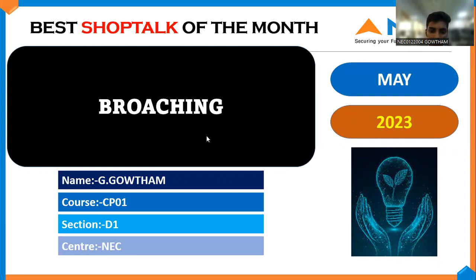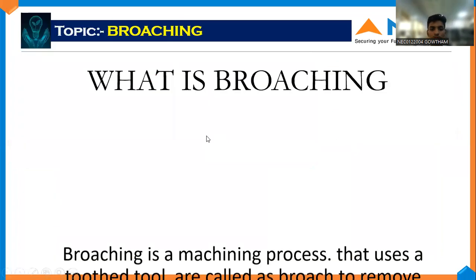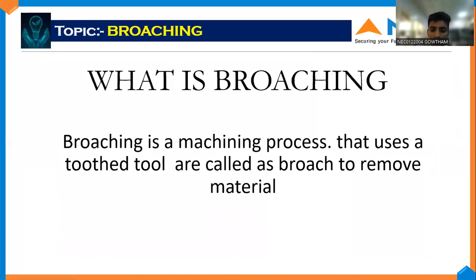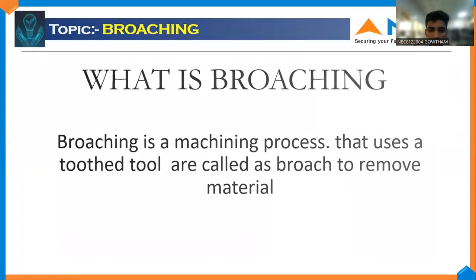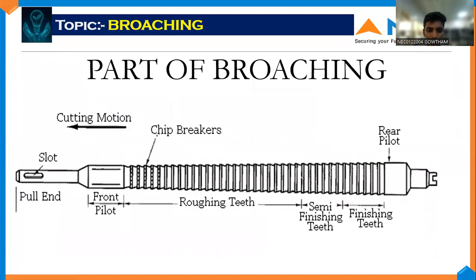What is a broaching tool? Broaching is a machining process that uses a tool, called a broach, to remove material. Main parts of the broaching tool: front pilot, rough teeth, semi-finishing teeth, finishing teeth, rear pilot, chip breaker, cutting edge.